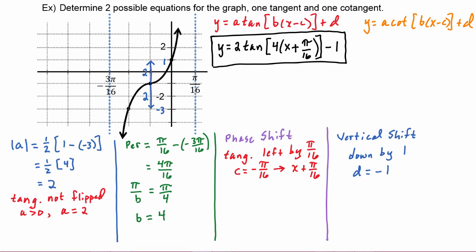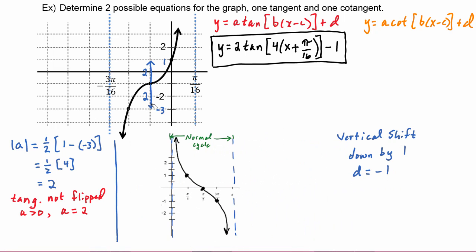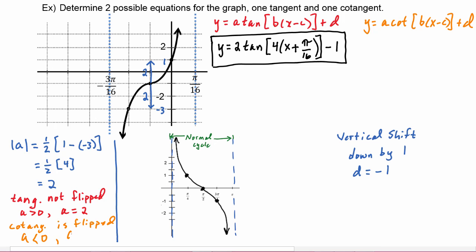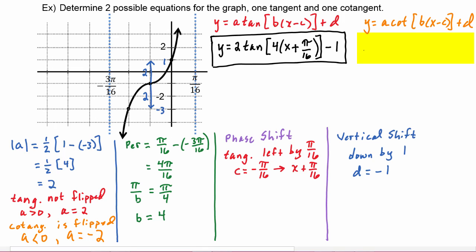Now let's look at what changes if it is a cotangent function. The vertical stretch is the same — still stretching by a factor of two. However, comparing to the unaltered graph of cotangent, this graph has definitely flipped. Normally cotangent starts from positive infinity and goes down to negative infinity. So for the cotangent graph it is flipped, meaning a has to be negative, so a is going to be negative two. We write y equals negative two cotangent.